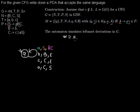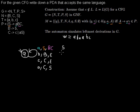Let the word be A, B, A, A, B, C. In the leftmost derivation we always have to start with the start symbol. Then we take the first rule and exchange the start symbol S by A, B, C.